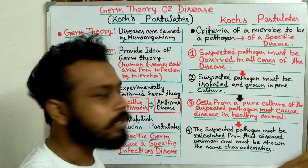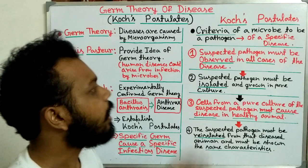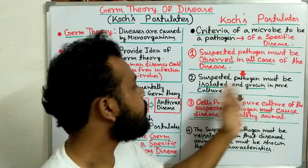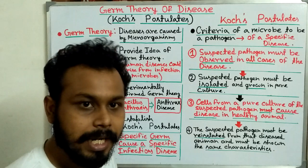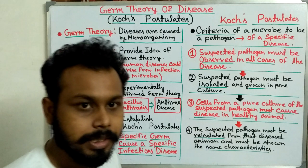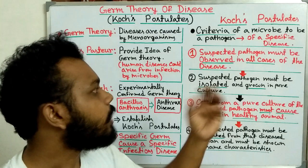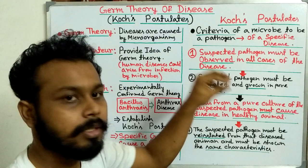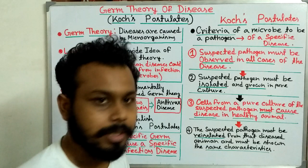The second criterion is: the suspected pathogen must be isolated and grown in pure culture. The suspected pathogen must be isolated from the diseased animal and then grown in pure culture. For example, for anthrax disease, we must isolate Bacillus anthracis from the diseased animals and grow it in pure culture.